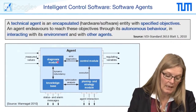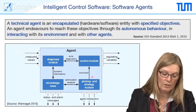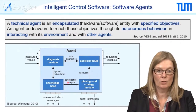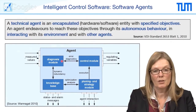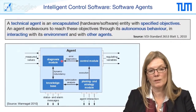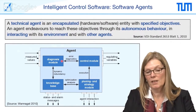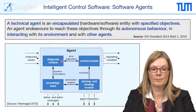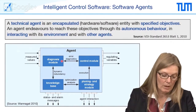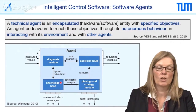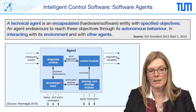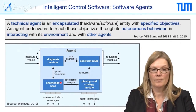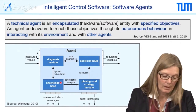What does an agent consist of? We have four different parts. On the left-hand side, there is a diagnosis module which detects that there is a fault and that the sensor is disconnected. The next one is a knowledge base. The knowledge base knows that by calculating the inflow and the outflow you can calculate the liquid level.